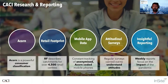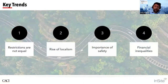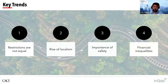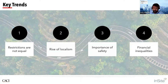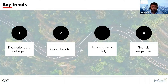I'll now cover some of the key trends that have emerged from these reports over the last year. We've all had restrictions, but the impact of these has not been equal. There's been a definite rise of localism — there were signs of this pre-pandemic, but this trend has really accelerated. There's an importance placed on safety; based on our surveys, 87% are worried about safety right now, and more interestingly, 55% think these safety elements will be here forever. And the rise of financial inequalities — we're all in the same storm, but not necessarily in the same boat.